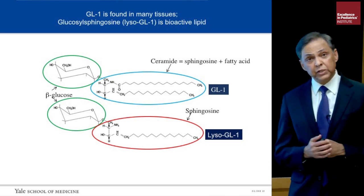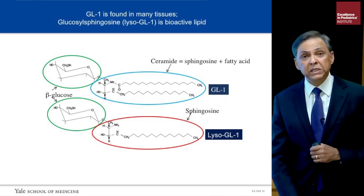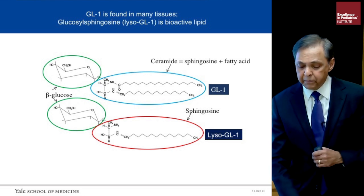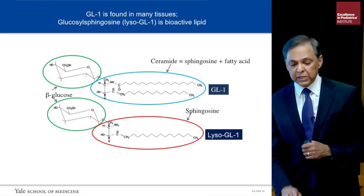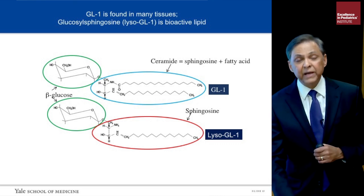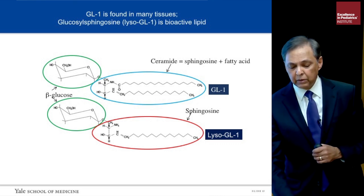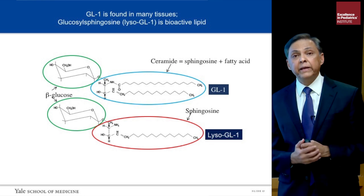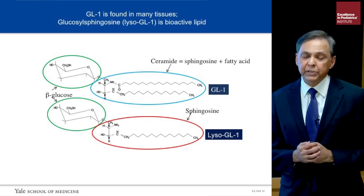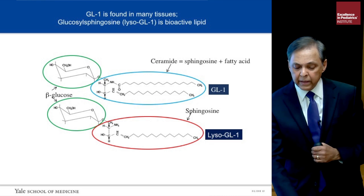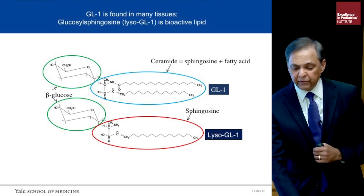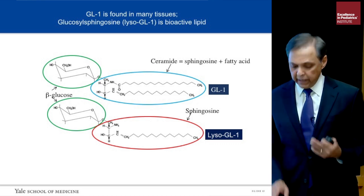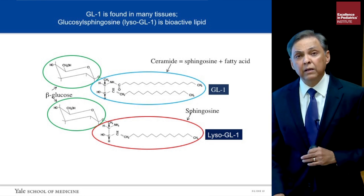When this enzyme is deficient, lipids accumulate in cells and body fluids. Glucocerebroside is essentially glucose linked by a beta linkage to ceramide. In addition, there is accumulation of a lysolipid called lysoglucosylceramide, where there is only sphingosine but the fatty acid has been cleaved. These molecules are very toxic and cause widespread cellular dysfunction.